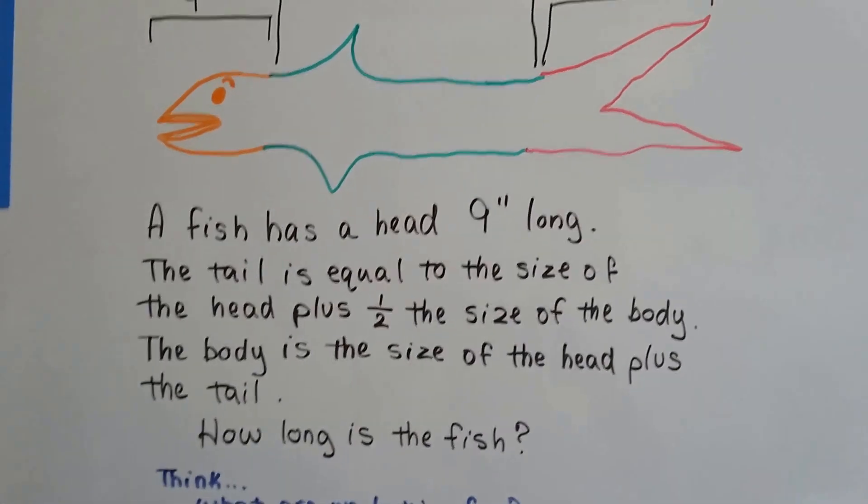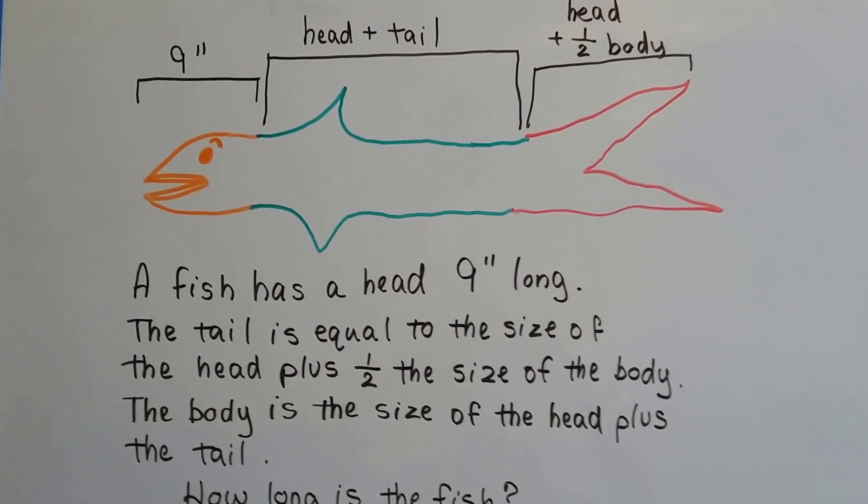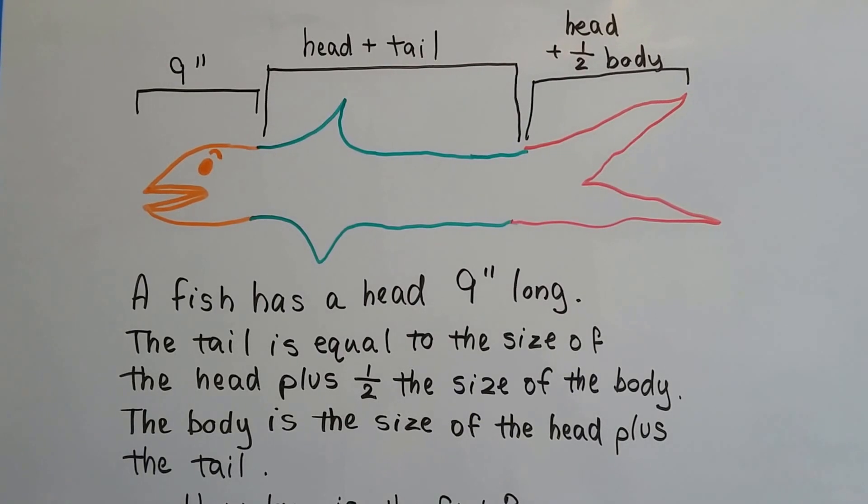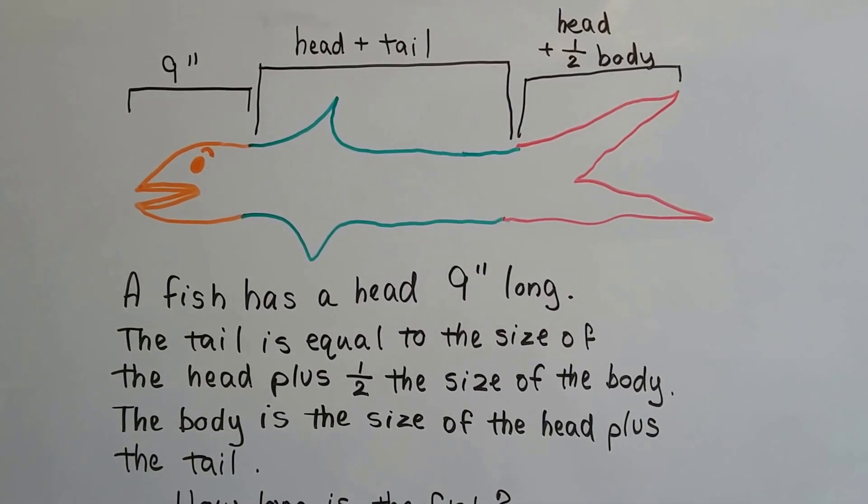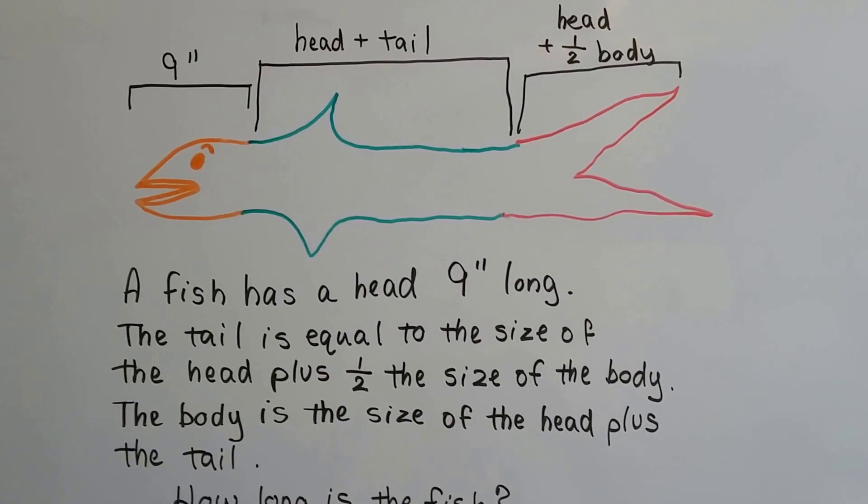So this is a very popular question on the internet. We have a fish that has a head nine inches long, and the tail is equal to the size of the head plus half the size of the body, and the body is the size of the head plus the tail. So how long is this fish?